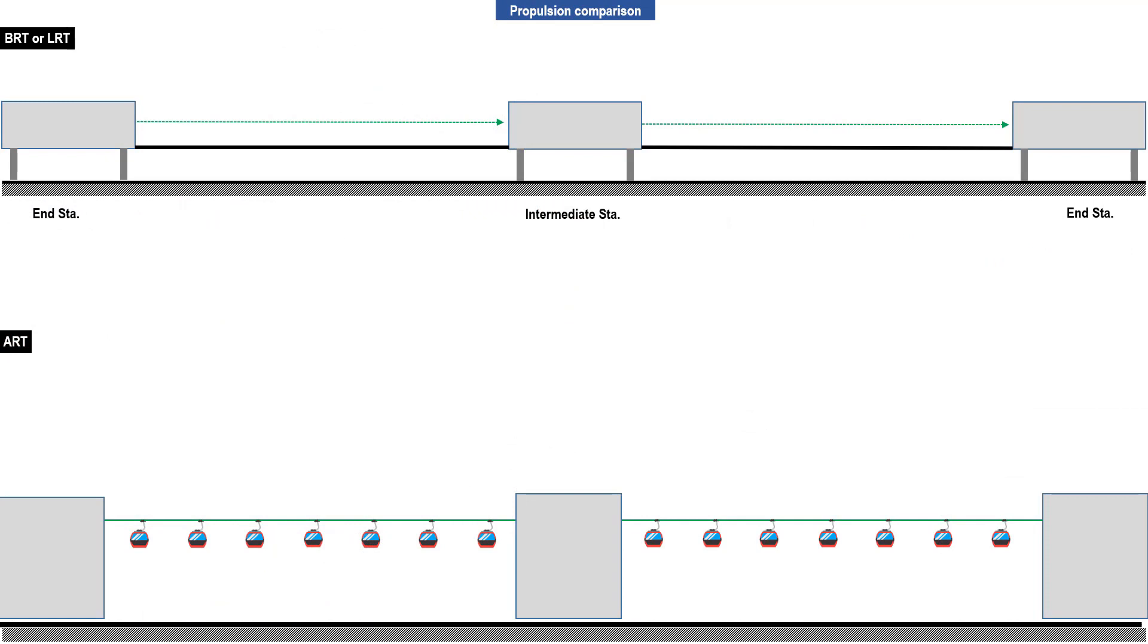The detachability characteristics of an ART is what makes it unique among all other forms of mass transportation. The comparison in this page partly explains why. In this simulation, BRT or LRT buses or trains go from station to station in this manner: leaves the station, travels to the next station, arrives at the next station, and the cycle is repeated. In an ART, the cabin streams constantly between the stations the entire operating day at the same speed.